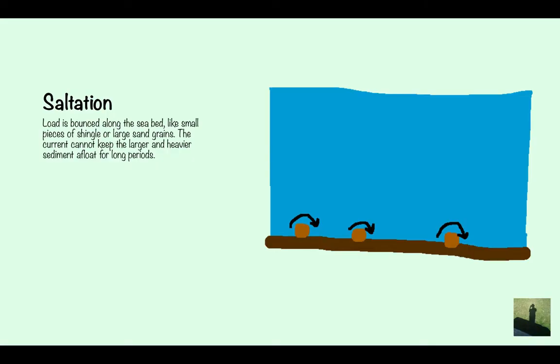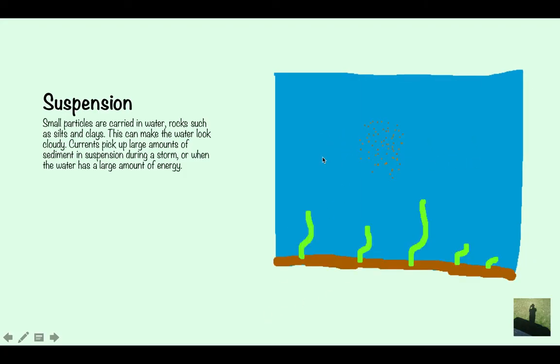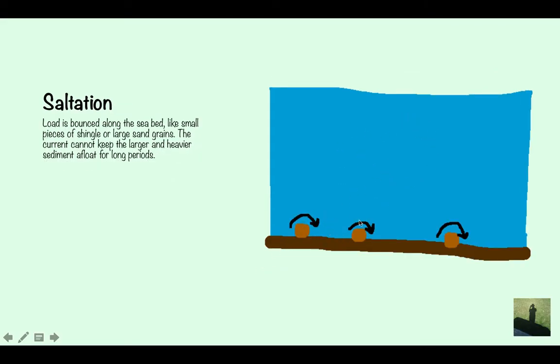Saltation is when the load is bounced along the seabed like small pieces of shingle or large sand grains, so they're the types of sediment that are going to get moved or transported in saltation. And the current cannot keep the larger, heavier sediment afloat for long periods of time. So that's why it's not floating here like it is in suspension. So it's getting rolled along the bed in saltation.